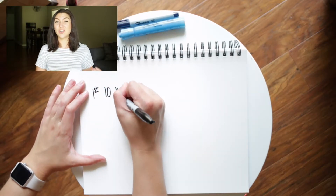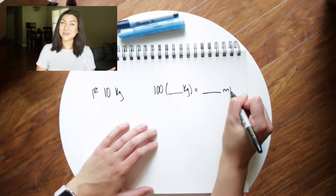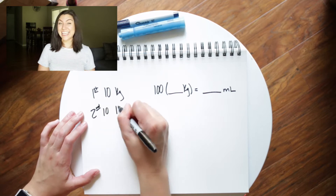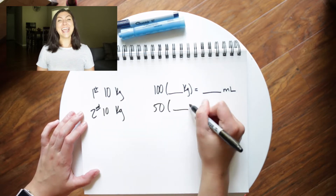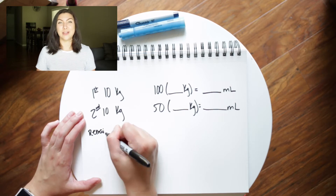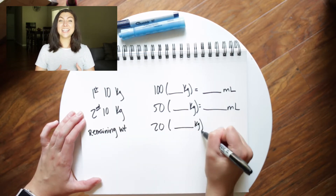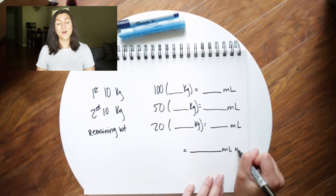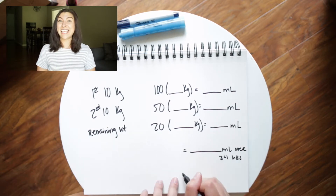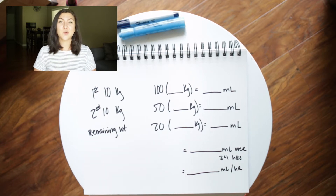Here are the basics of this formula. It is 100 mils times your patient's weight for the first 10 kilograms. It's then 50 mils times your patient's weight for the second 10 kilograms. And then it is 20 mils per kilogram for the remainder of your patient's weight. You add all of those numbers together, and that is the total volume your patient will receive over a 24-hour period. Then to get your hourly IV fluid rate, you divide by 24.